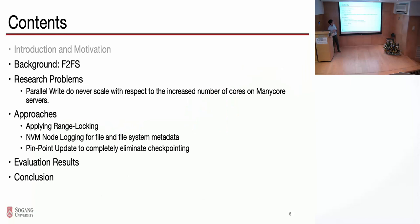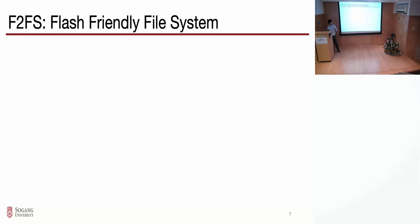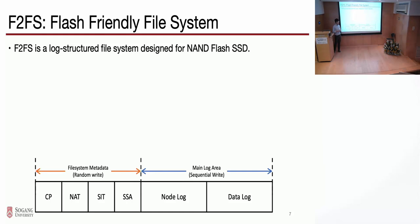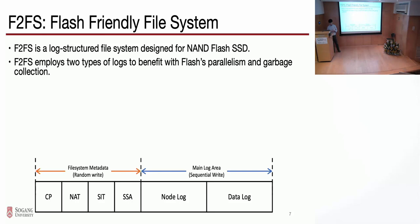The rest of the talk consists as follows. Before jumping into our research problems and approaches, let me briefly explain F2FS. F2FS is a flash-friendly file system — basically a log-structured file system designed for NAND flash SSDs. It has file system metadata which can be written with random writes, and also a main log area which is written in a sequential pattern.